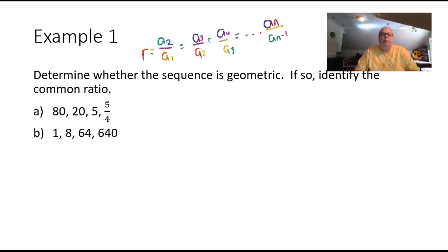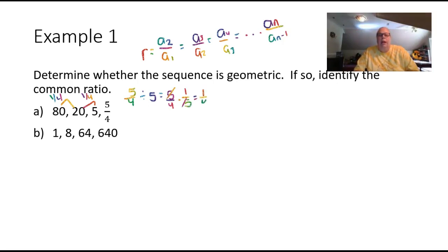In part a, we have the sequence 80, 20, 5, and 5/4. Dividing: 20 divided by 80 gives 1/4; 5 divided by 20 gives 1/4; and 5/4 divided by 5 equals 5/4 times 1/5, so the 5s cancel, giving 1/4 again. Part a is geometric, and r equals 1/4, since that is the common ratio between all pairs of consecutive terms.